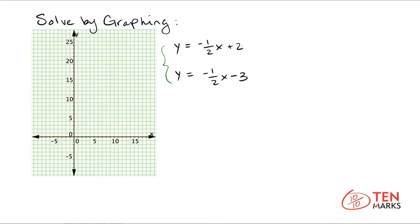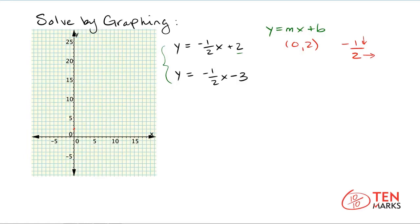I'm going to begin by graphing the first equation. Both equations are written in the form y equals mx plus b, which means the constant term represents the y-intercept. I'm going to mark that in red. Since it has positive two, the y-intercept has the coordinates zero, positive two — right there on the graph. The slope is negative one-half, which means you go down one and to the right two from your y-intercept. Down one brings you to one.